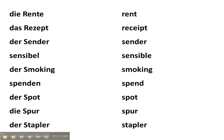The German word die Rente, which in English means the pension or a retirement payment that you receive. But in English we have the word rent, which in German is die Miete, which is an actual payment you make to a landlord for a place of residence.